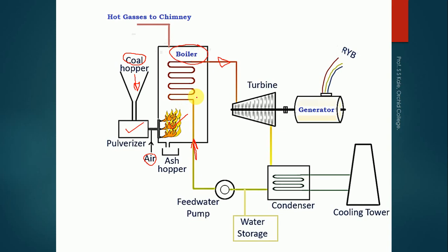Inside the tube we have water, and outside the tube we have hot gases. Heat is transferred from the hot gases to the water, and the water gets converted into steam at very high pressure. So at the inlet of the boiler we have water, and at the outlet we have high-pressurized steam.